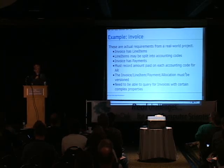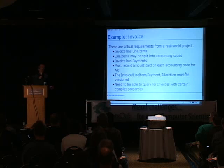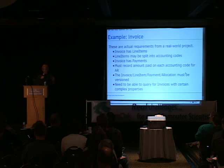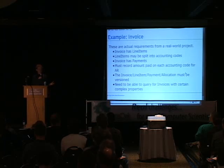We have invoices, and invoices have line items. Line items may be split into accounting codes — if they bought a book we may want to book it internally as a little bit to accounting code A and a little bit to accounting code B. An invoice has payments, and we have to record the amount paid on each accounting code for each line item. Then my boss comes in and says we need a change history for all of this for accounting purposes, so now the database schema is incredibly complex.